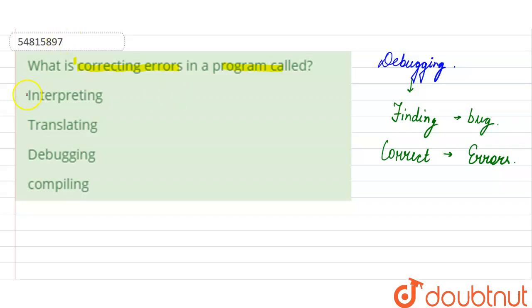The options here would be interpreting, the next would be translating, debugging and compiling. So here it is, what? Debugging.